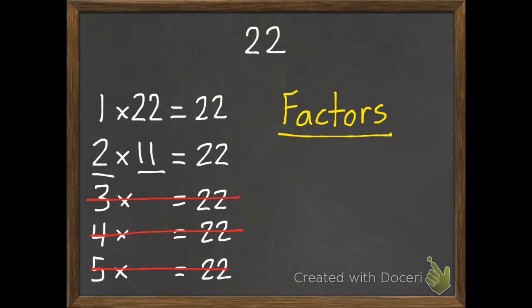And the factors of 22 are 1, 2, 11, and 22. Don't worry, not all of them will take quite that long. Since these are a little tricky I'm going to do one more example.